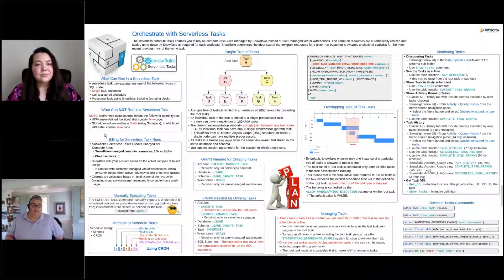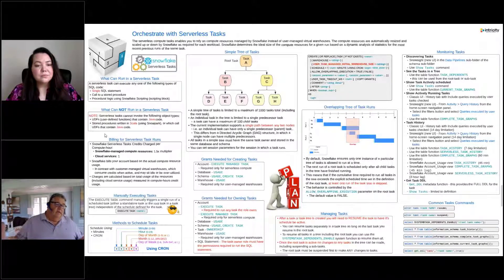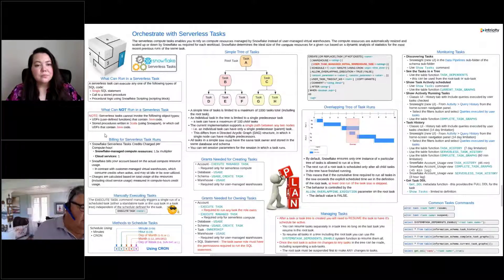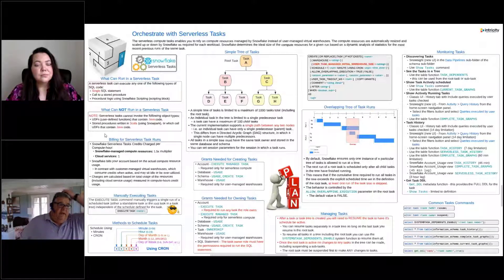When people ask, what about the billing of serverless tasks? When we run a managed task that we're controlling the warehouse size, then we're going to pay for the time that that warehouse is running. So if we have a task that runs on our consumption warehouse, and that warehouse is set to suspend after five minutes, and that task runs for a minute, that warehouse is going to continue to run for five minutes. So we're paying for five minutes of credits of that warehouse.